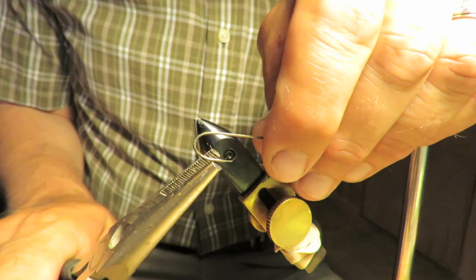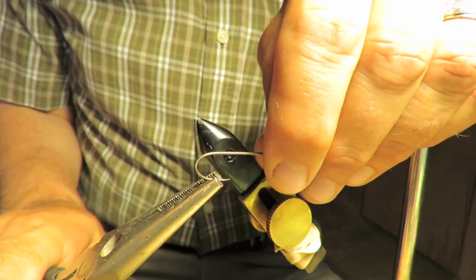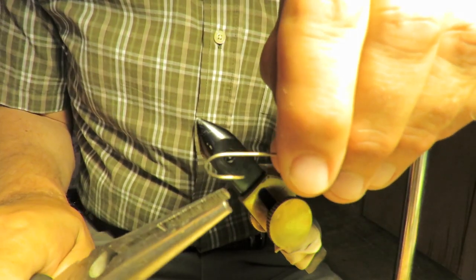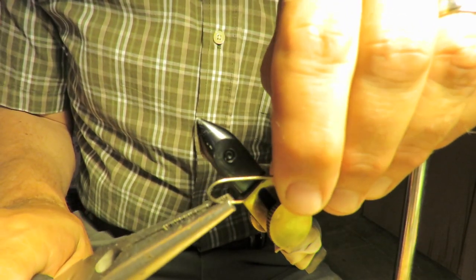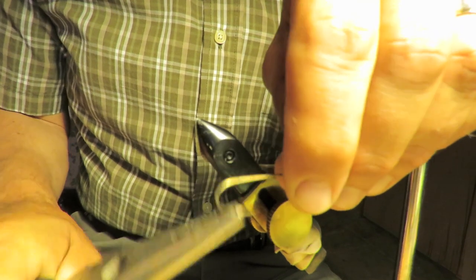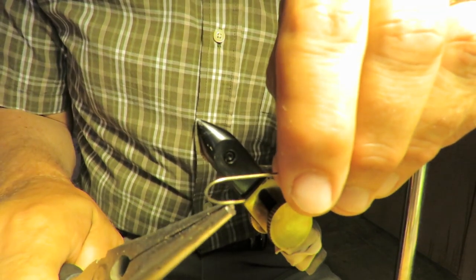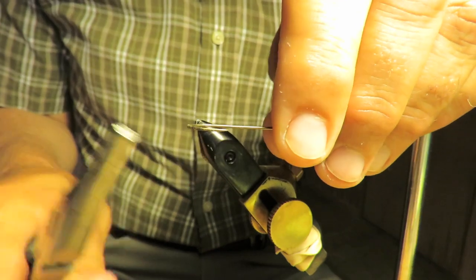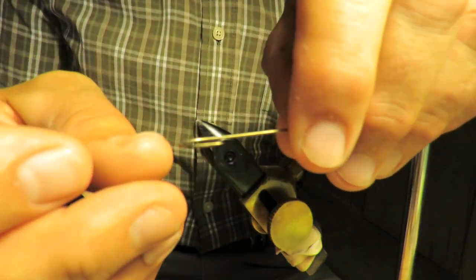First step, as always for me anyway, you don't have to do this if you don't want, is to flatten the barb. If you're gonna flatten the barb, make it the first step because quite often times these cheap hooks they'll break, and that's a bad thing to have happen after you've tied a fly.